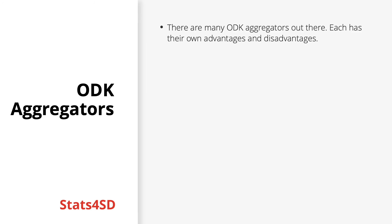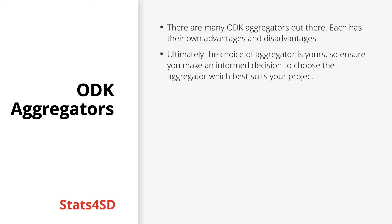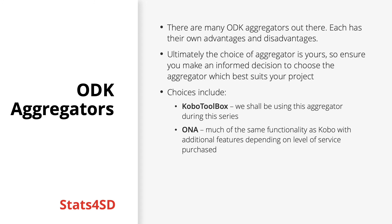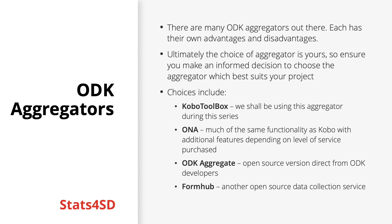There are many ODK aggregators out there, each with their own advantages and disadvantages. Ultimately the choice of aggregator is yours, so ensure you make an informed decision to choose the one which best suits your project. Choices include Kobo Toolbox, which we shall be using during this series; Honor, which has much of the same functionality as Kobo with additional features depending on the level of service purchased; ODK Aggregate, the open source version direct from the ODK developers; FormHub, another open source data collection service; and many others.